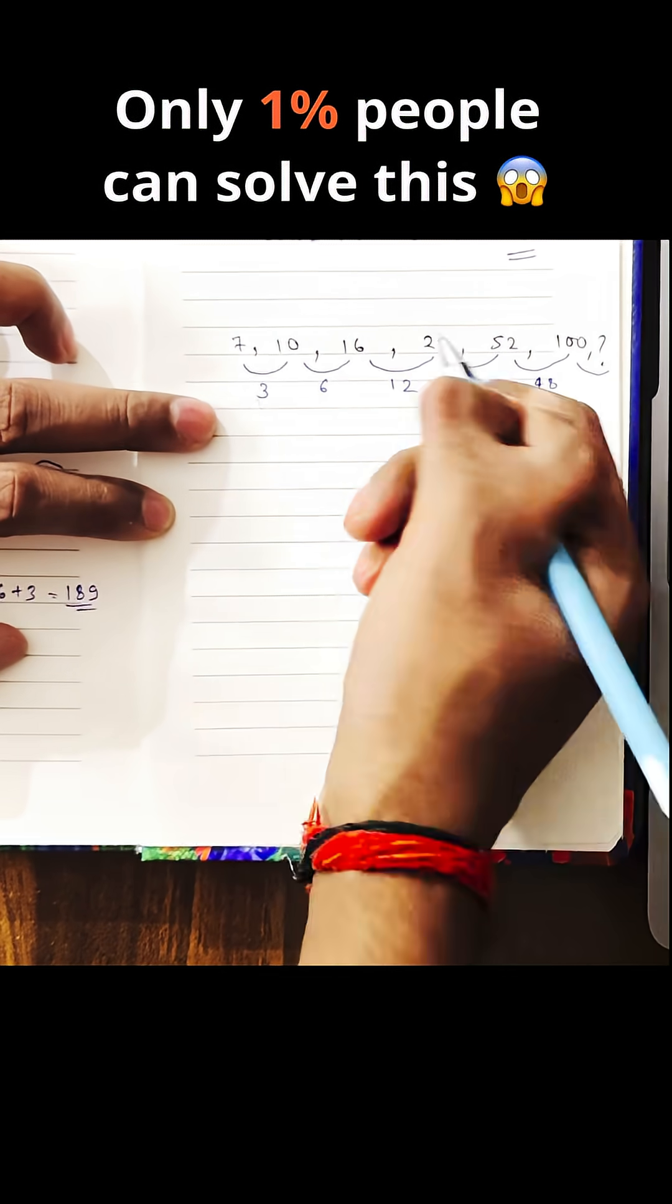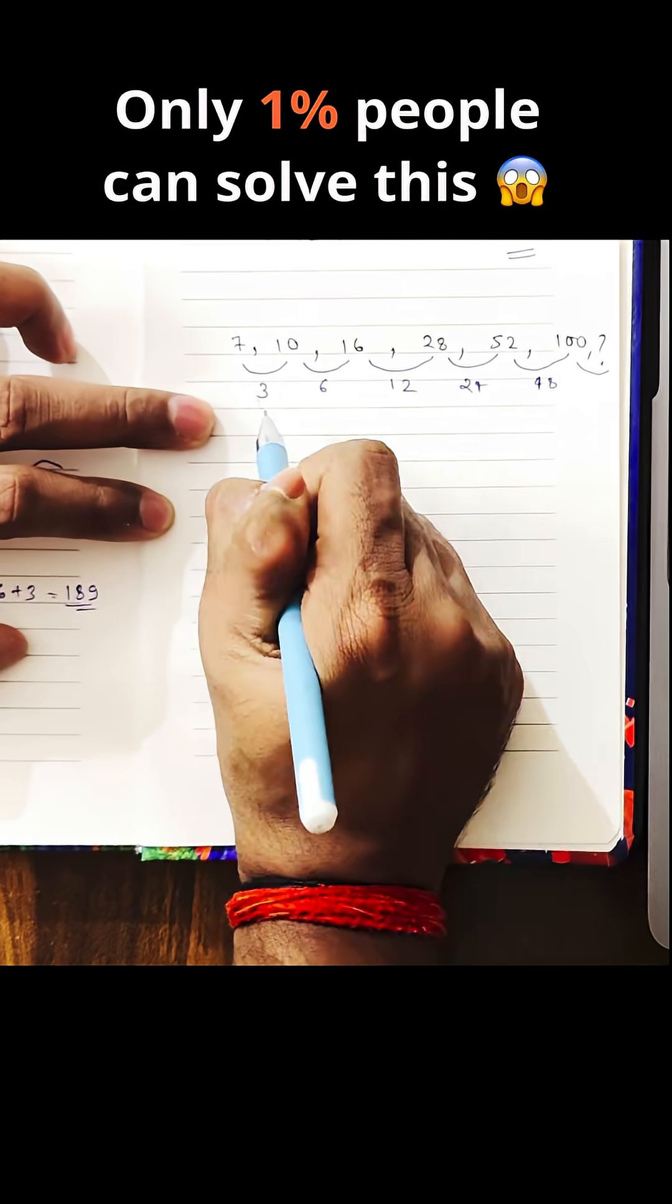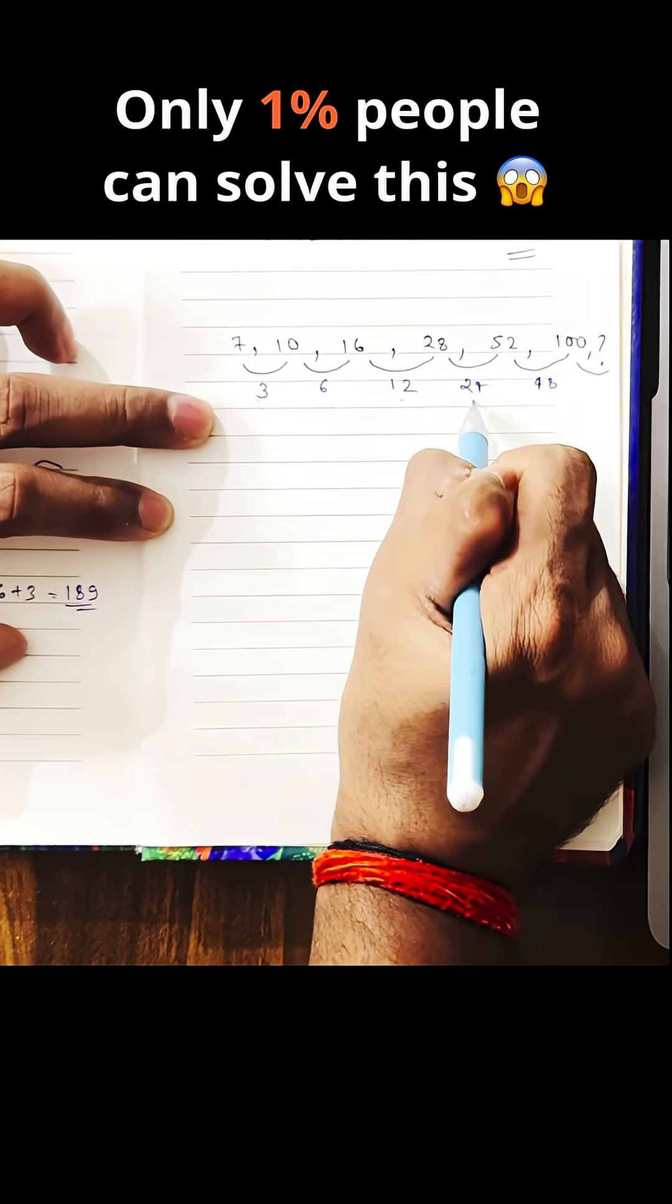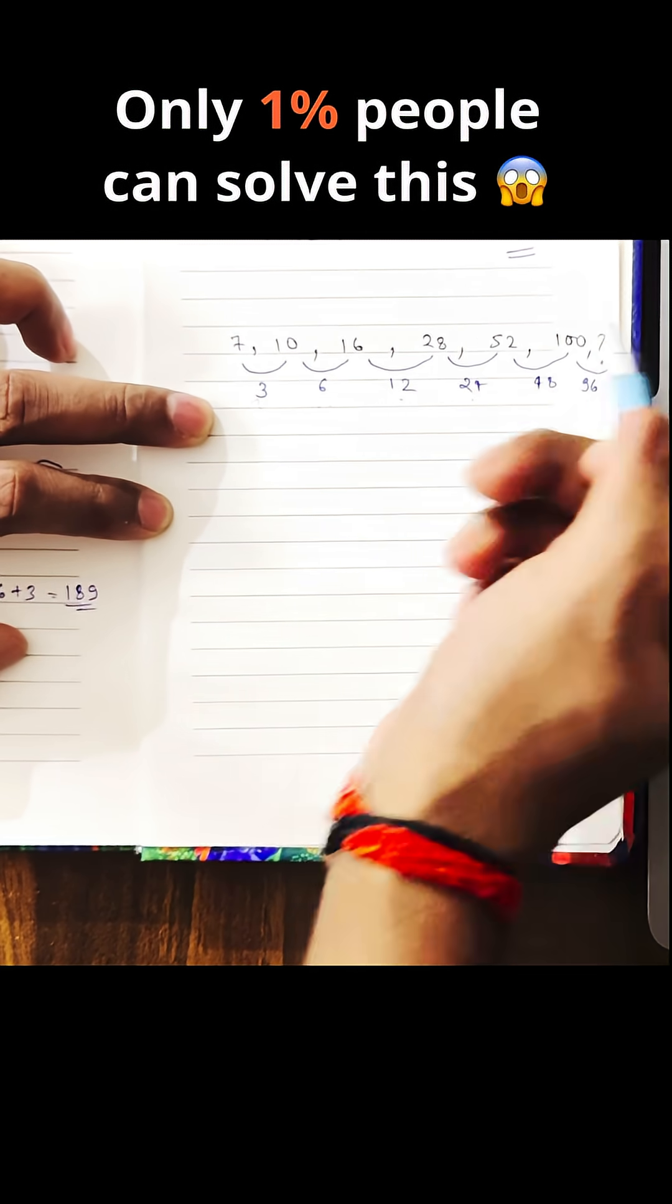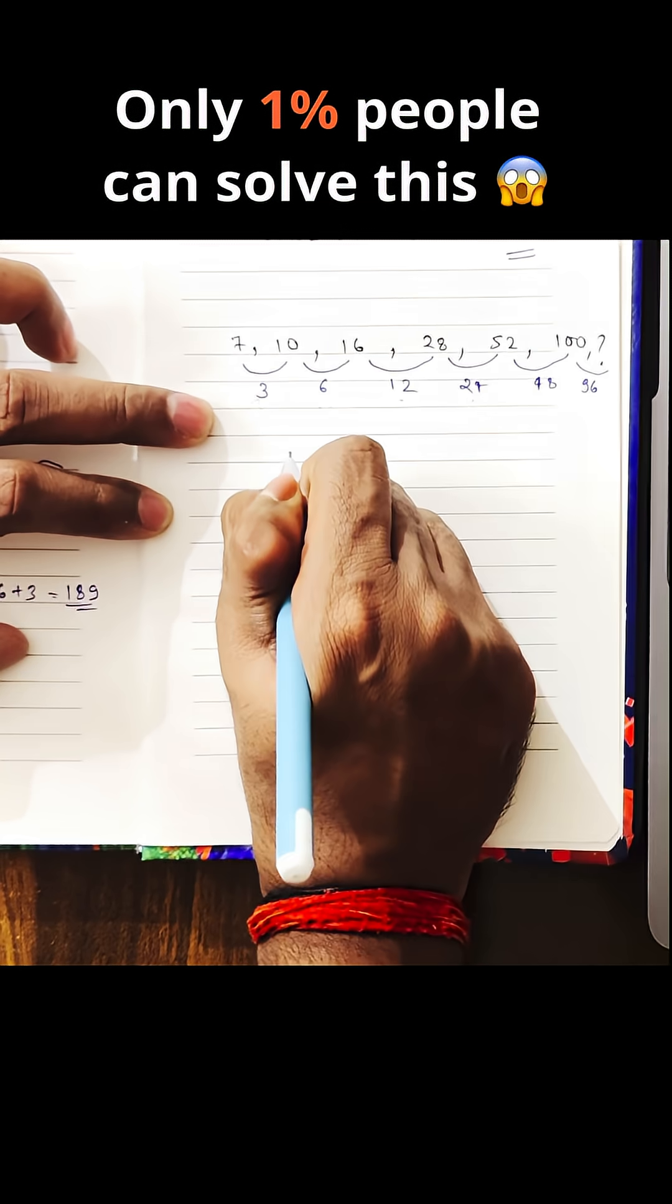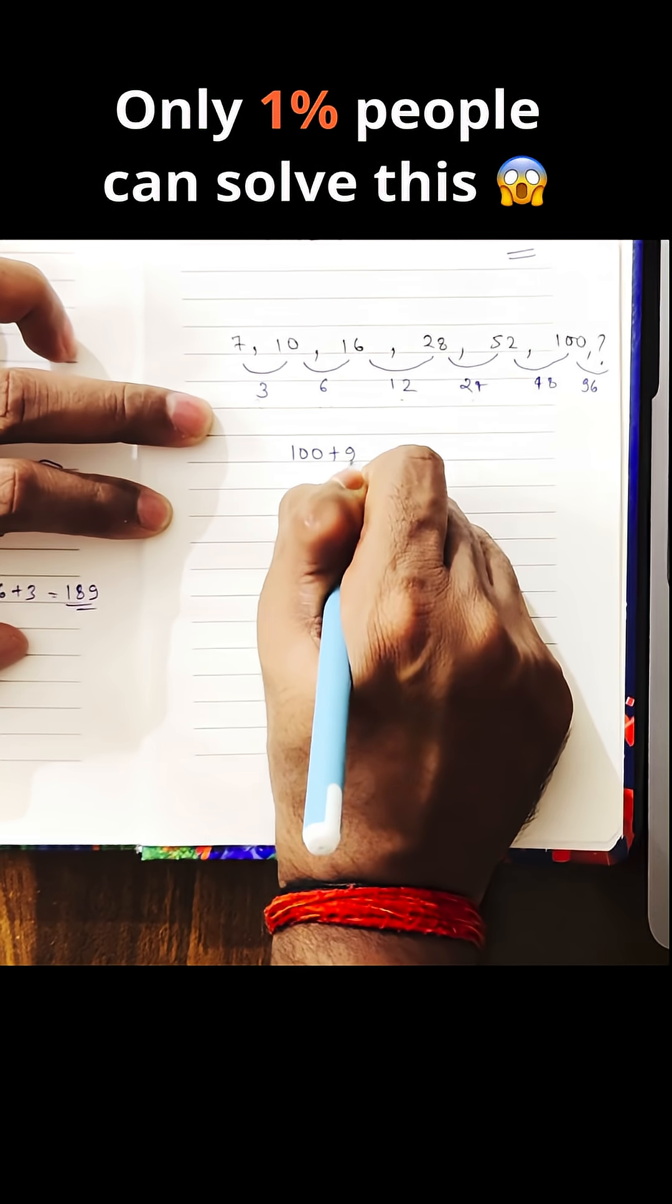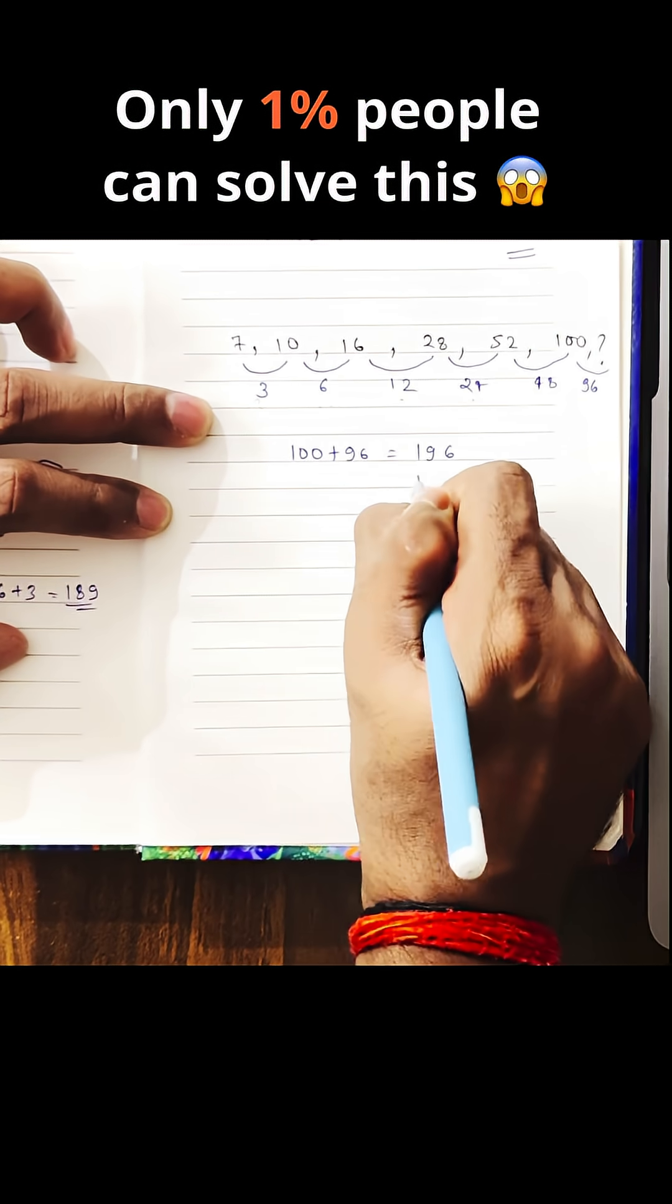So, the next will be always we are increasing with 2 times. 3 twos are 6, 6 twos are 12, 12 twos are 24, 24 twos are 48. The next one will be 96. So, the next one will be, the answer will be 100 plus 96, that will be 196.